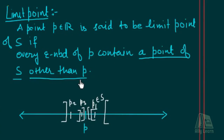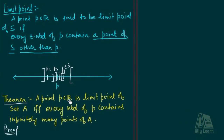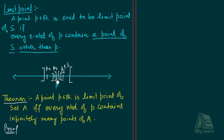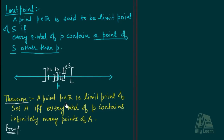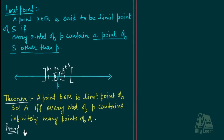That means P cannot be a limit point of S. So we have an equivalent criteria for a point to be the limit point of a set. Theorem 1: A point P belonging to R is a limit point of a set A if and only if every neighborhood of P contains infinitely many points of A.